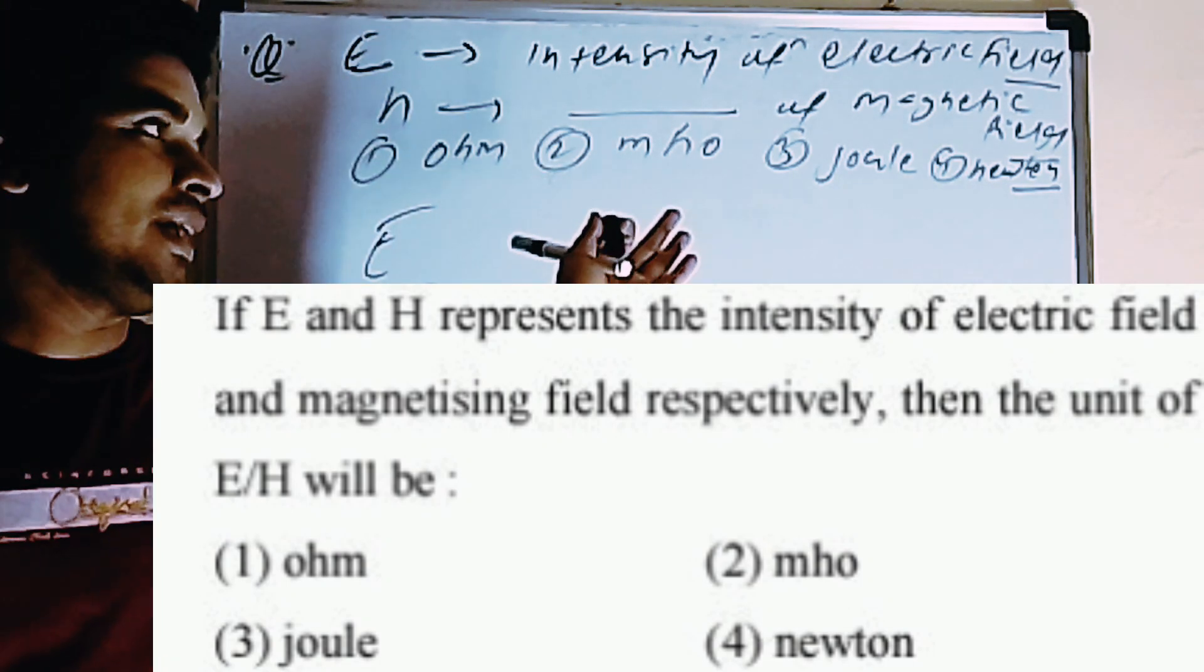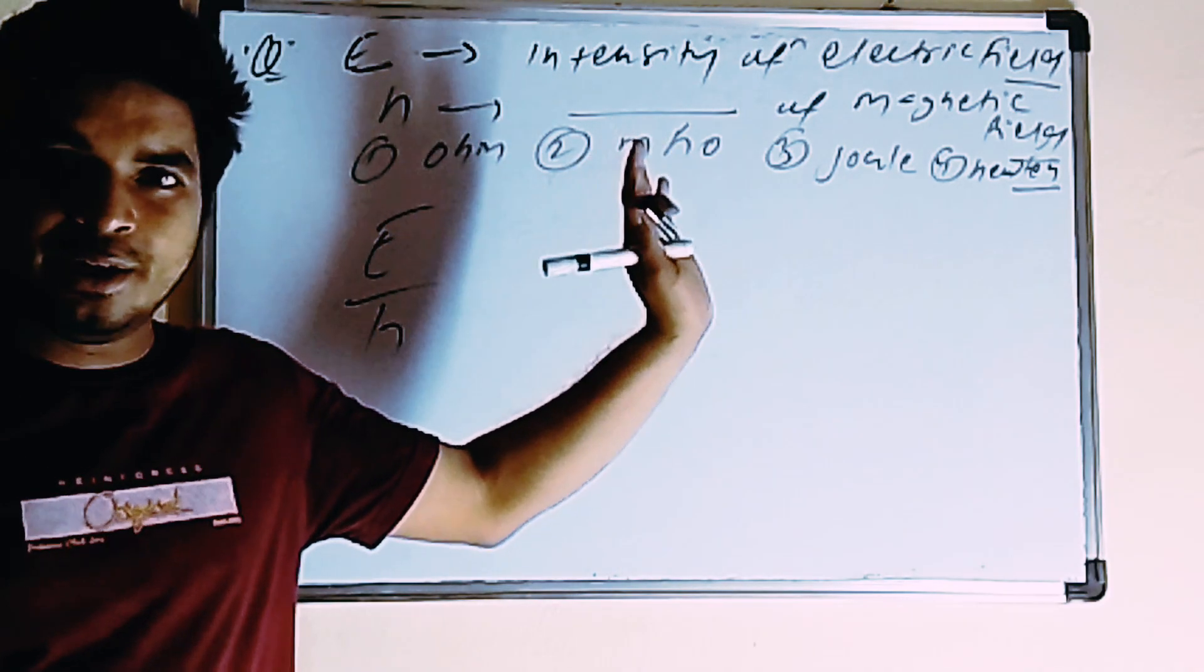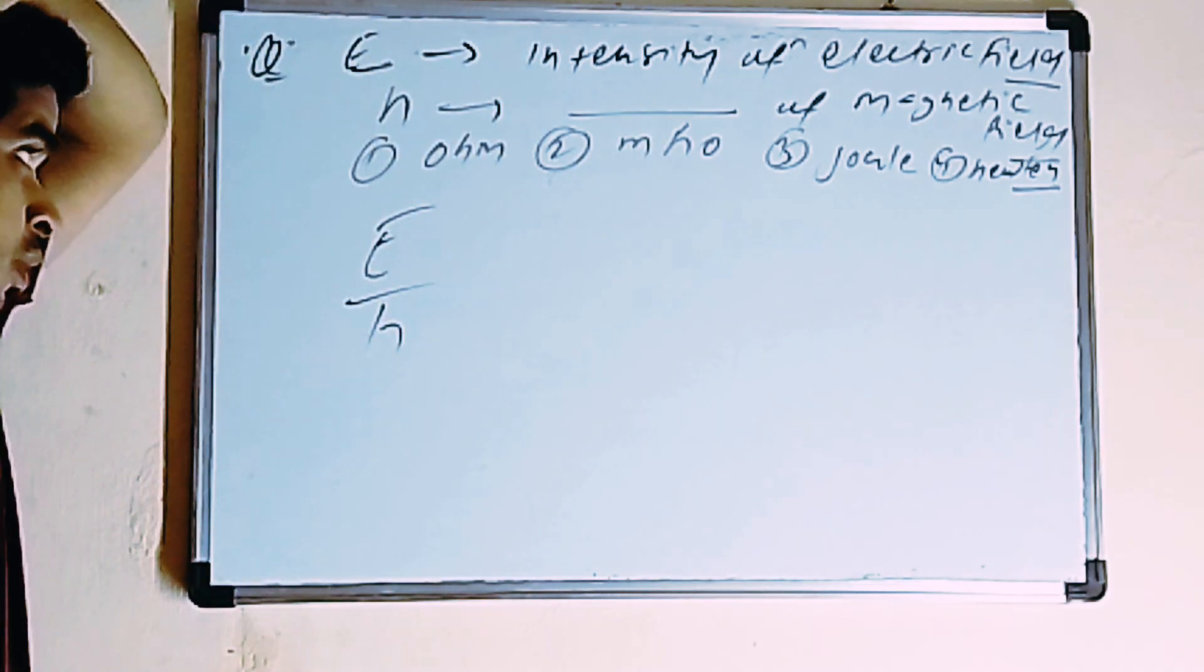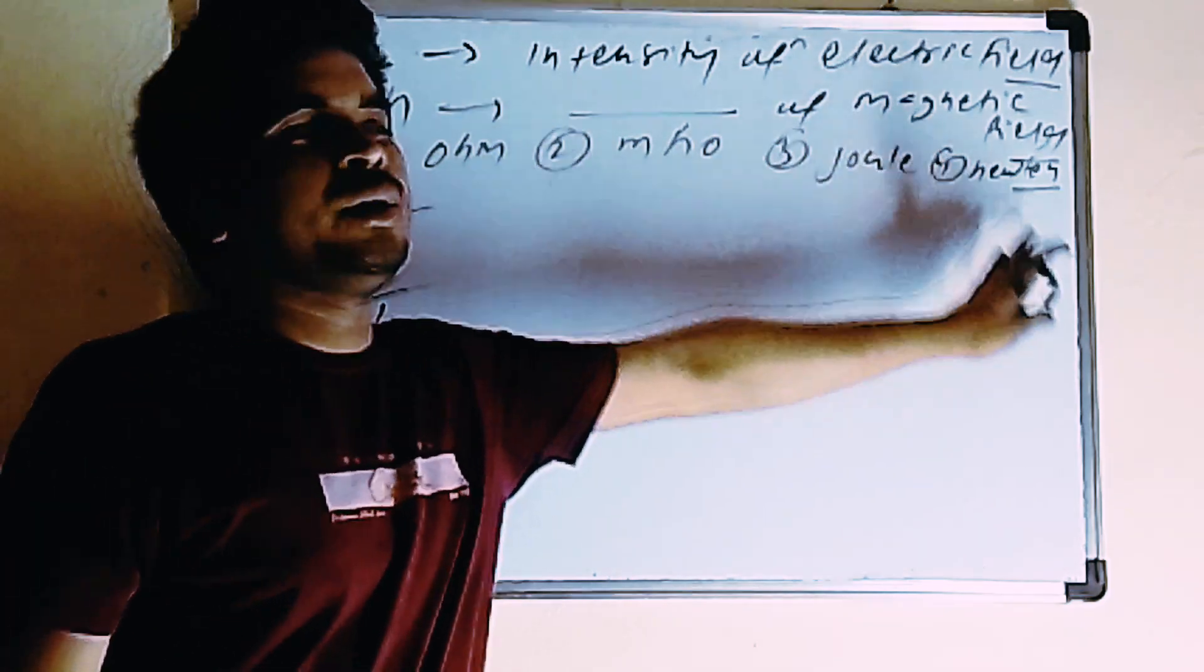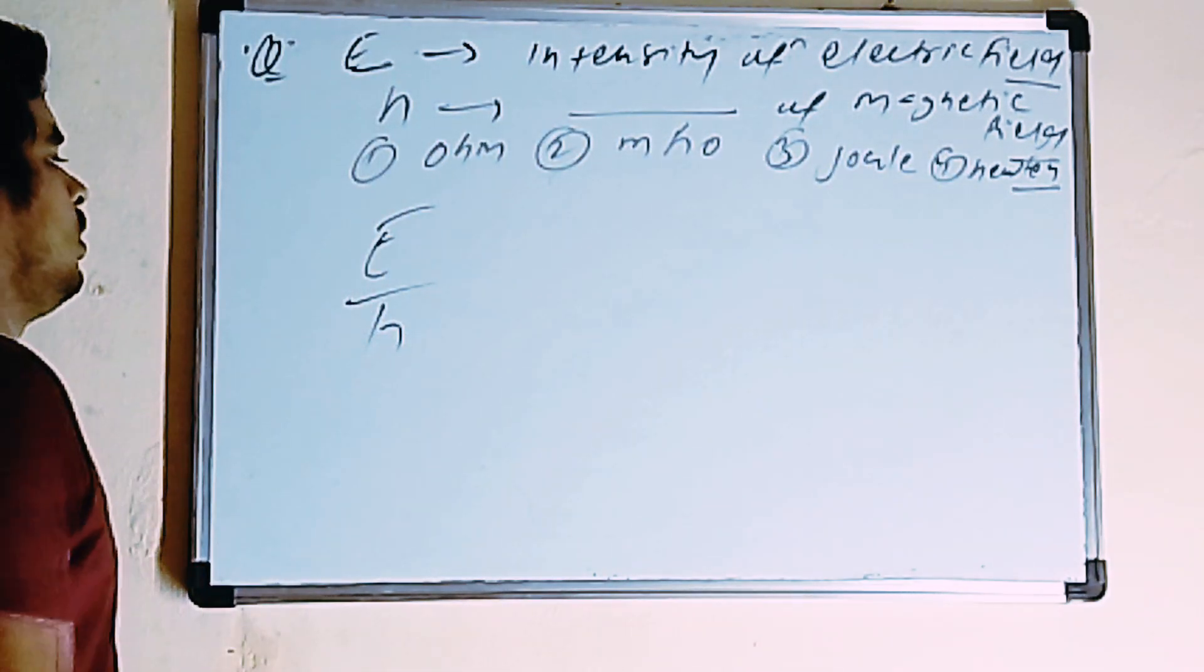E by H. Obviously, E is intensity of electric field, H is intensity of magnetic field. Options: Ohm, MHO, Joule, Newton.